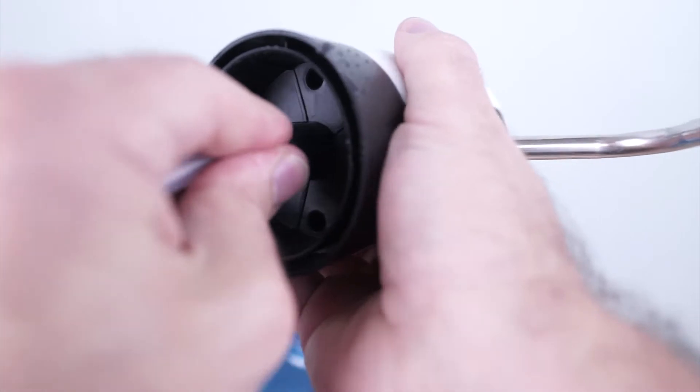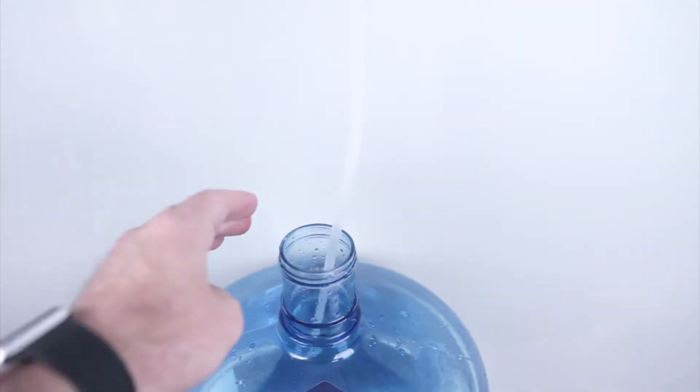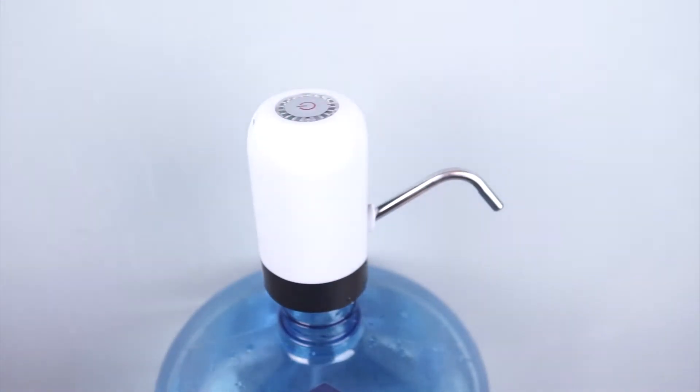To install, just place the plastic end of the flexible water tube into the 5-gallon jug and set the water pump on top. Note that there is nothing holding the water pump to the jug other than the pump's weight, so be sure not to tip the 5-gallon jug.